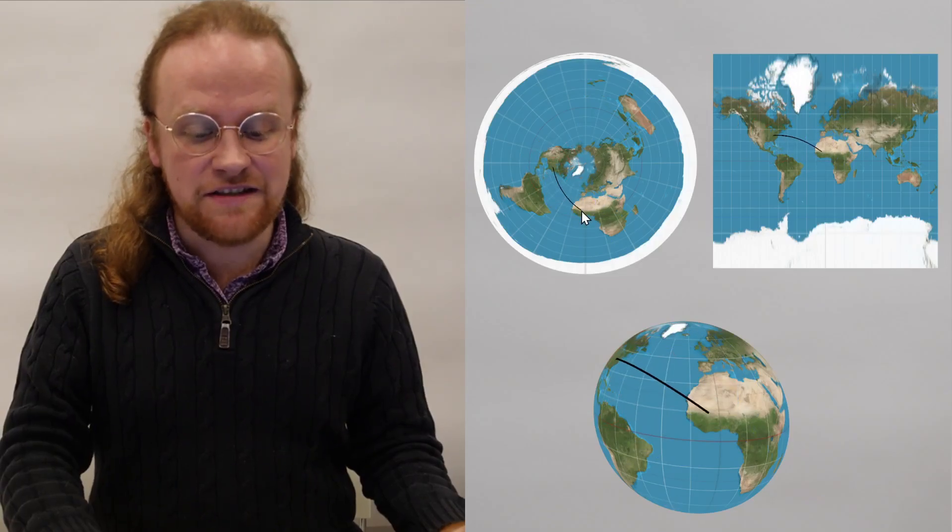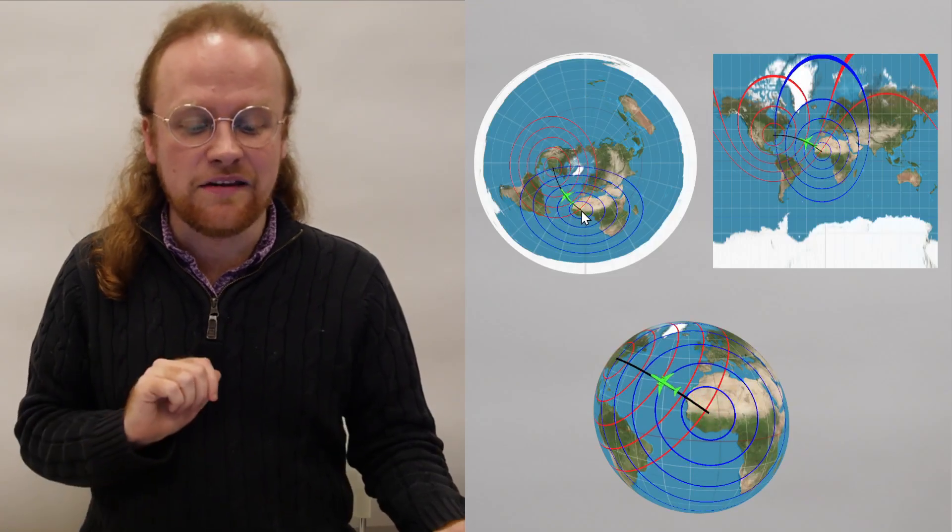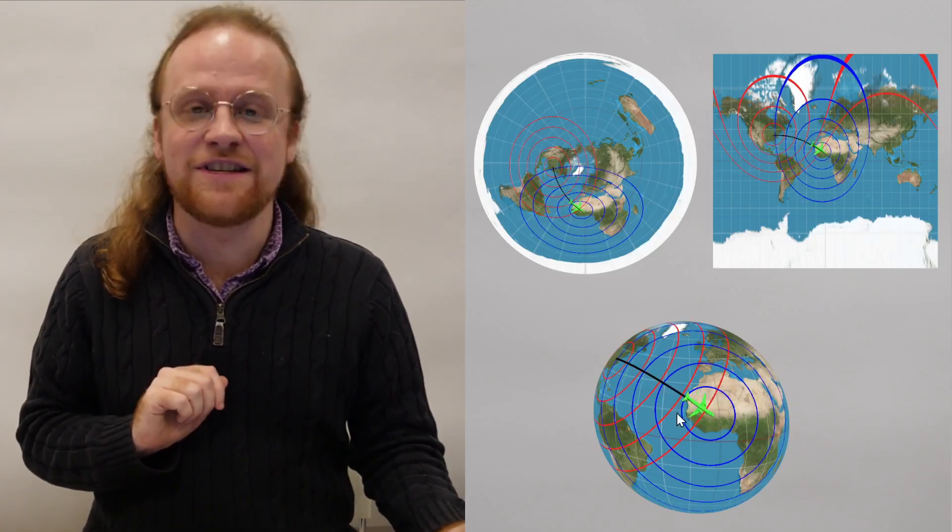If we draw circles that are equidistant from both our points, then we notice that the trajectory of least distance happens to pierce all of the circles at right angles, and that'll be a useful tool going forwards.